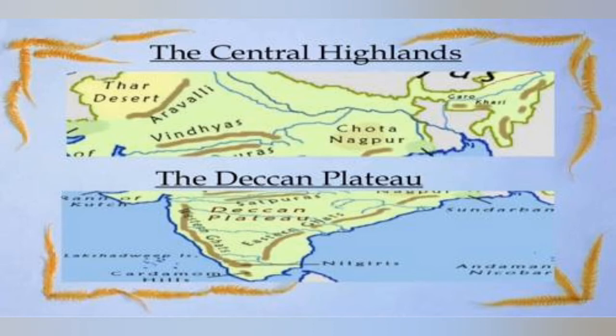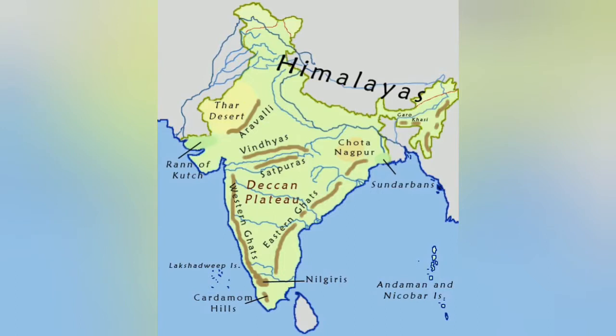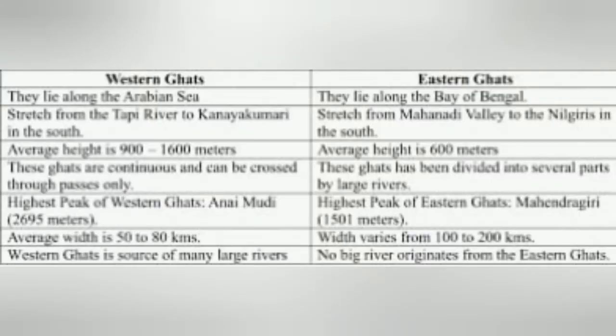The Aravalli Hills are highly eroded and broken hills. These lie on the western and northwestern margin of the Peninsular Plateau, extending from Gujarat to Delhi in a southwest to northeast direction. Western Ghats mark the western edge of the Deccan Trap and are continuous, with an average elevation of 900 to 1600 meters above sea level, lying parallel to the western coast along the Arabian Sea. Eastern Ghats mark the eastern edge of the Deccan Plateau and are discontinuous and irregular, with an average elevation of around 600 meters above sea level, lying parallel to the eastern coast along the Bay of Bengal.